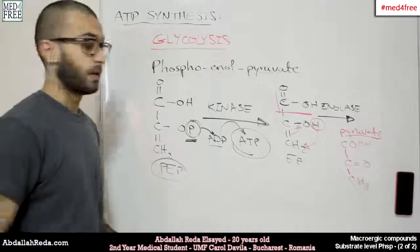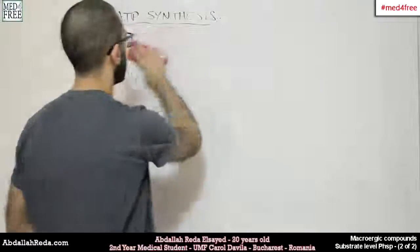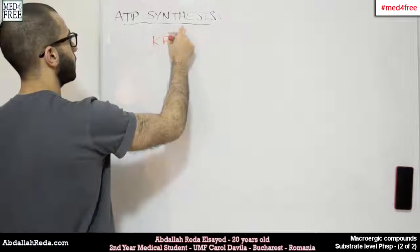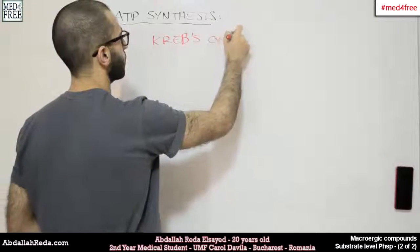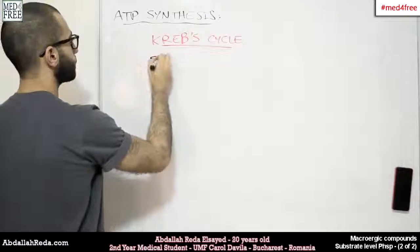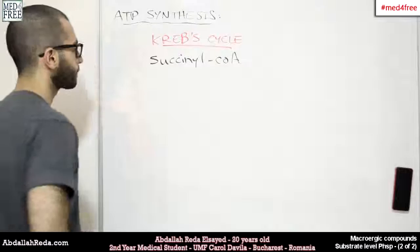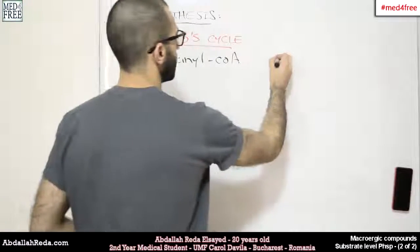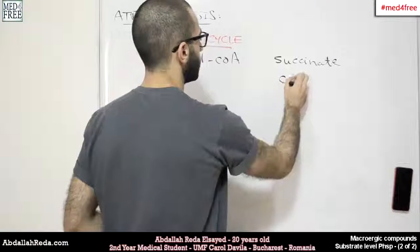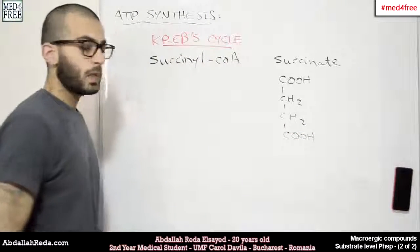This is the second example. The third example occurs in Krebs cycle. Krebs cycle or citric acid cycle - it's the same thing. Our compound is called succinyl-CoA. Technically, succinyl-CoA looks like that. Succinyl-CoA is a very symmetrical compound. We have a carboxylic acid group, then CH2, CH2, and another carboxylic acid group.